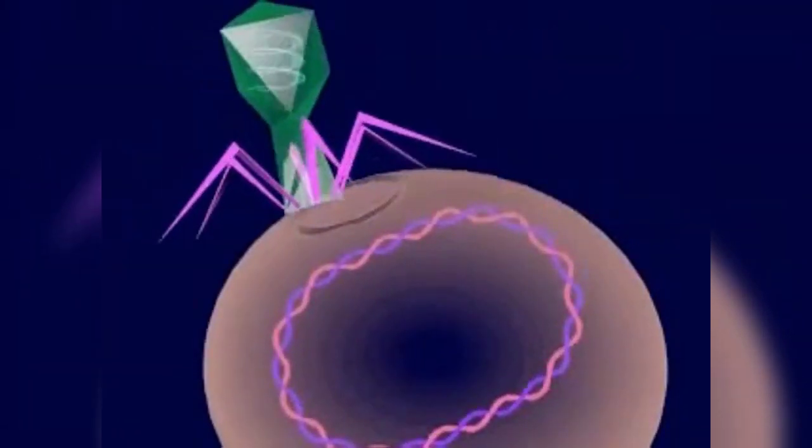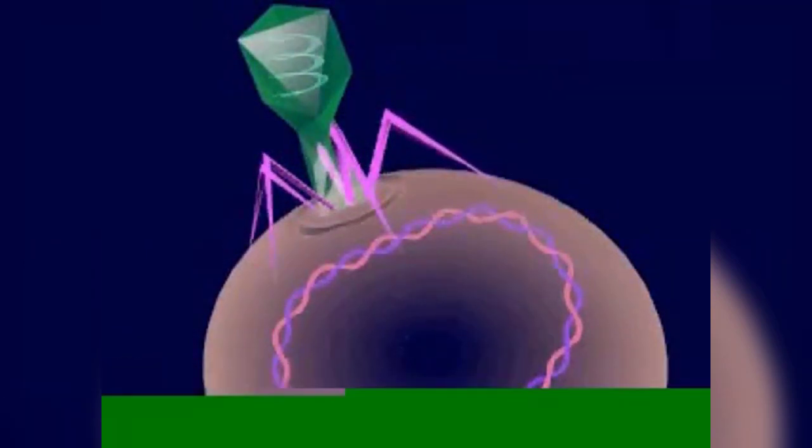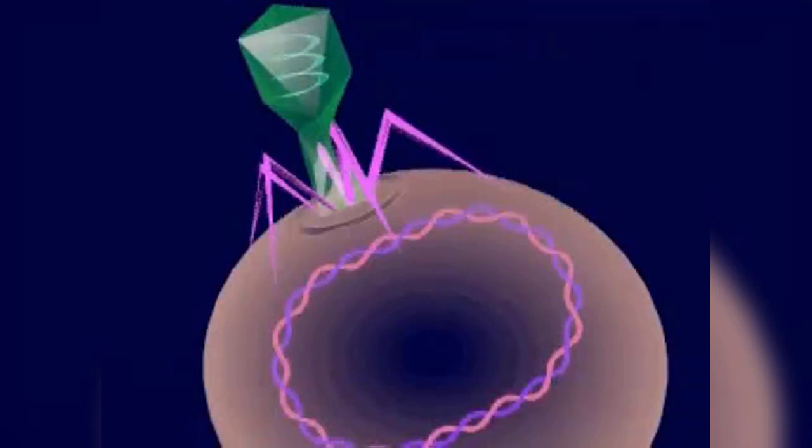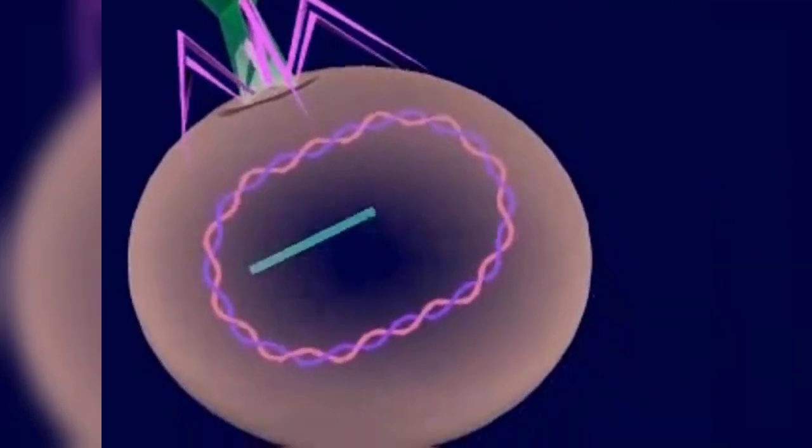A bacteriophage attaches to a bacterial host cell by recognizing and locking onto a specific receptor site on the surface of the host cell. The virus then injects its DNA into the host cell. The empty coat remains outside the cell.